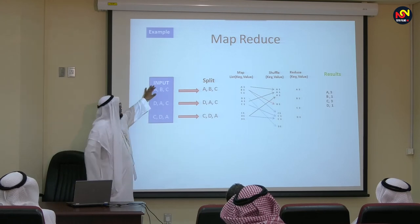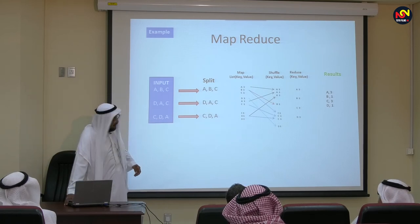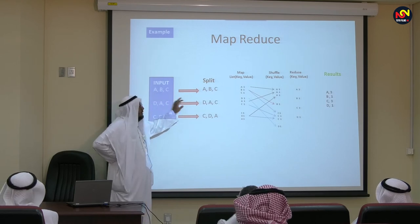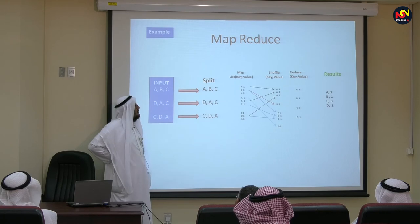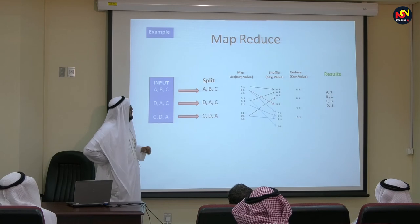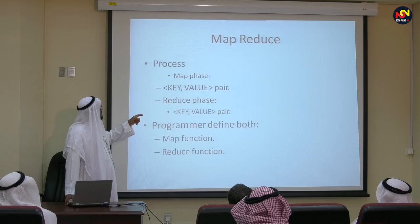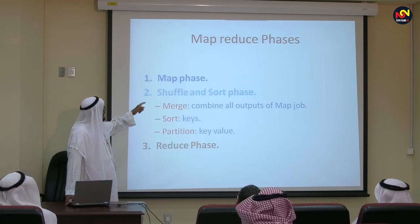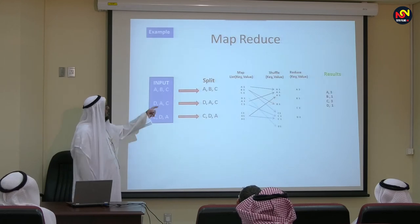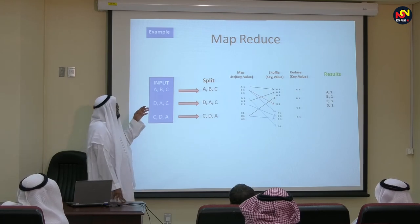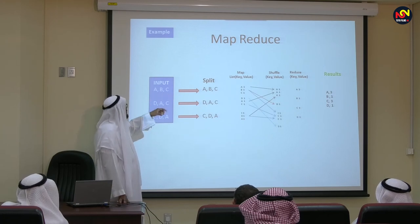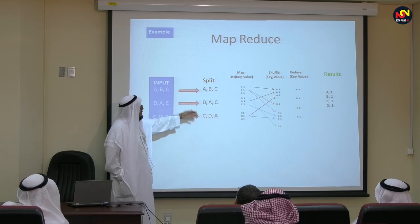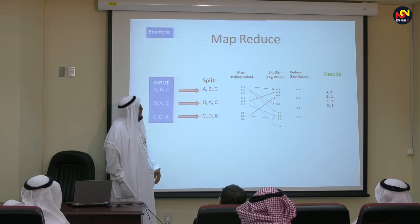Suppose I have this input file: ABC, DAC, CDA. You split this data — ABC becomes A alone, B alone, C alone. Same for the second and third lines. We have the split. Now in the map phase, A appears once, B appears once, C appears once — making a count. The same for the second line: D one, A one, C one. And same for the third line. Now you do the shuffle based on key value — you find A appears here once, and once, and once. You find C appears in multiple places. D appears once.